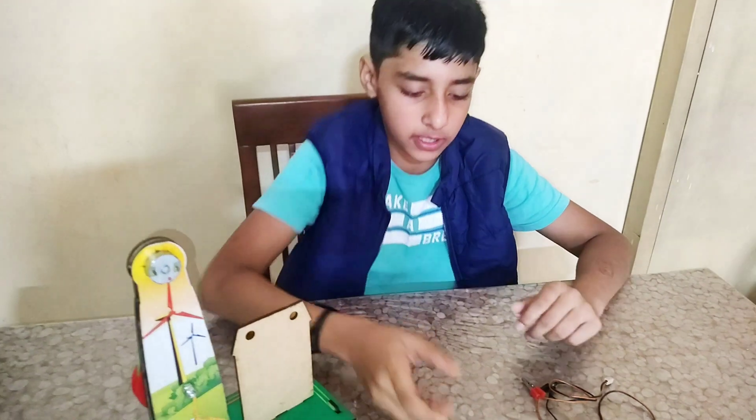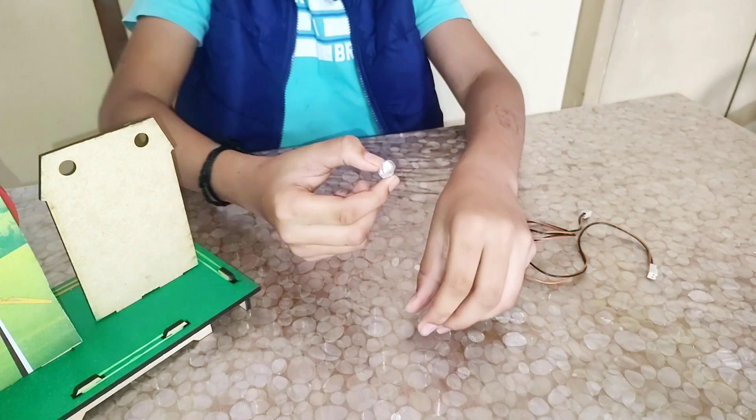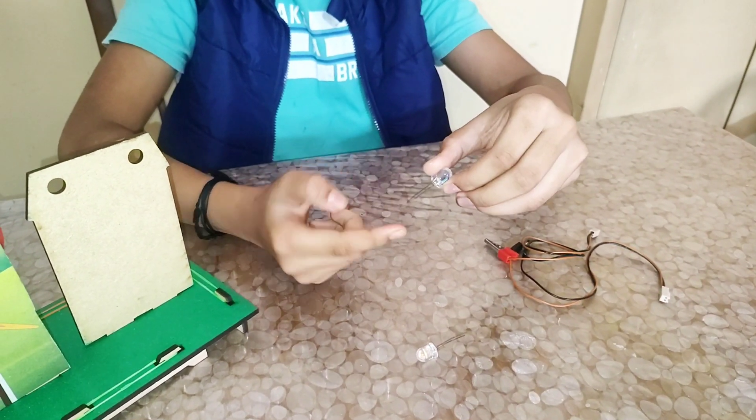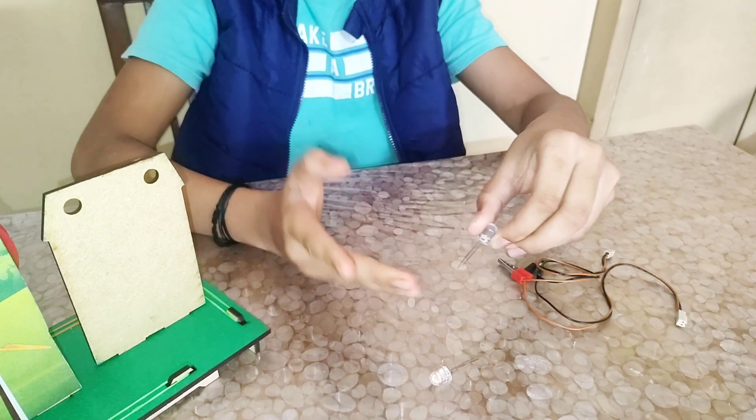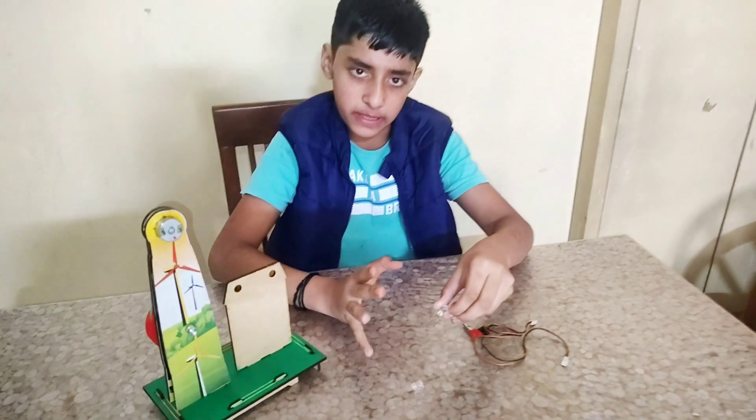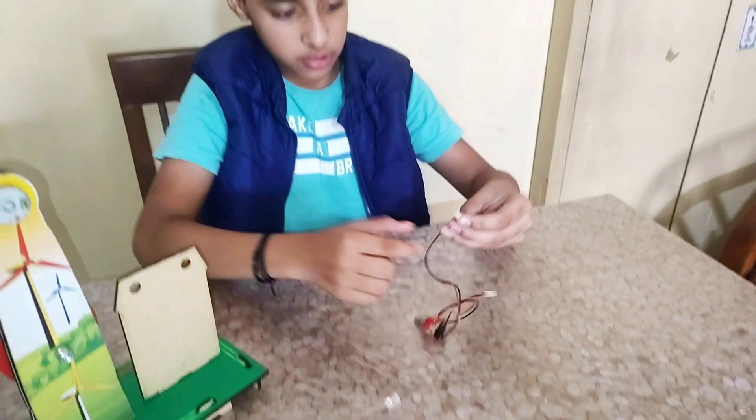Now we need to do the connection. We have two bulbs. This is the long leg and this is the short leg. Long leg means positive, short leg means negative. And this is the wire system.